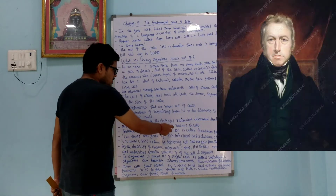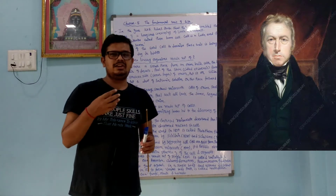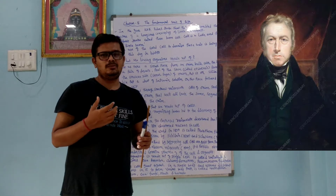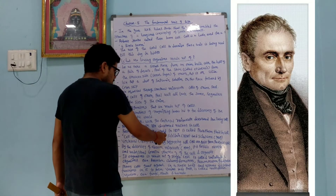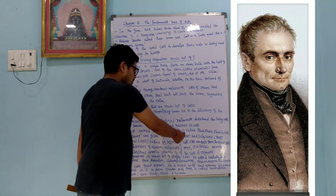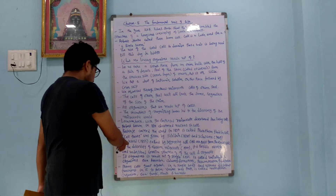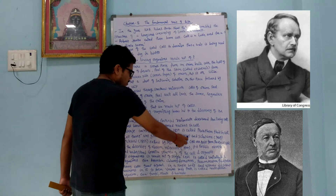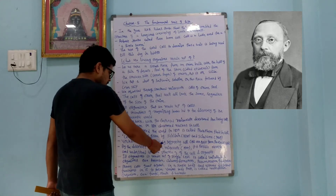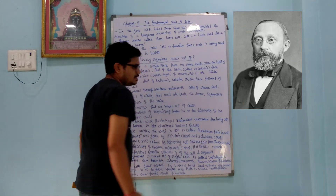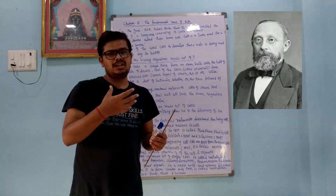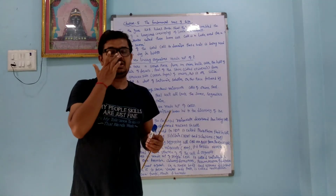Robert Brown in 1831 discovered the nucleus in the cell. The nucleus contains DNA and RNA — deoxyribonucleic acid and ribonucleic acid — which are very important for inherited characteristics. Purkinje coined the word 'protoplasm' in 1839, referring to the fluid part present in the cell. Then cell theory was given by Schleiden in 1838 and Schwann in 1839. Another scientist, Virchow, in 1855 expanded the theory by suggesting that all cells arise from pre-existing cells. From one cell, two cells are obtained; from two cells, four cells — that is called cell division.